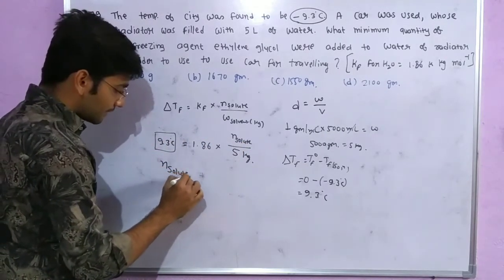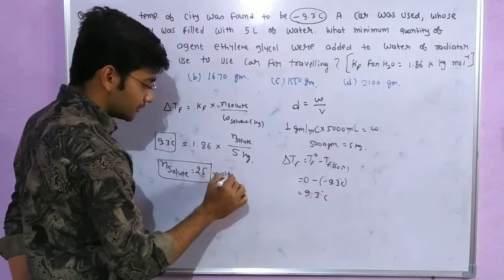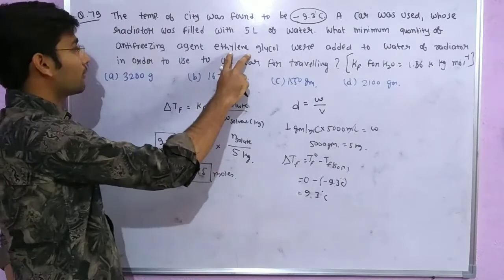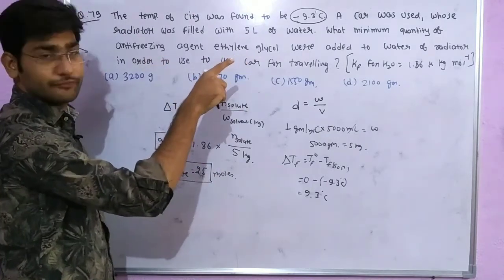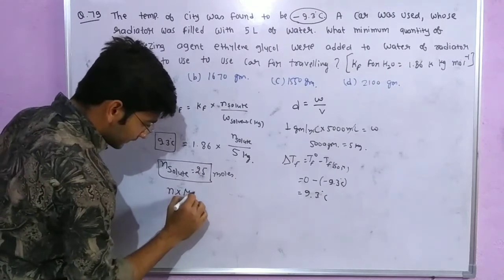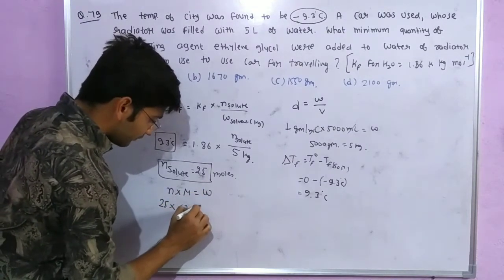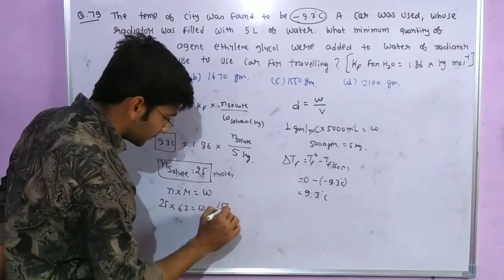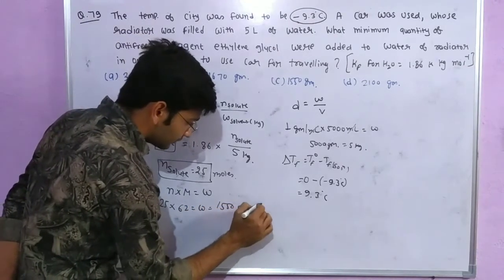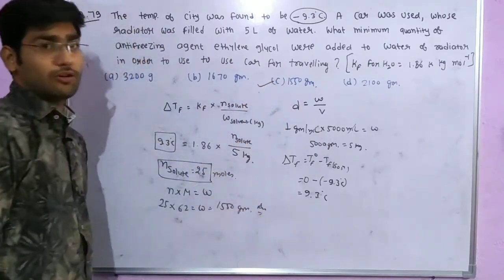The number of moles of solute is 25 moles of ethylene glycol. To calculate weight, use moles into molar mass. Moles is 25, molar mass is 62, so weight is 1550 grams. This is your answer.